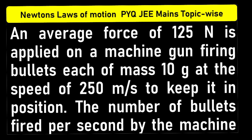An average force of 125 newton is applied on a machine gun firing bullets each of mass 10 grams at the speed of 250 meter per second to keep it in position. The number of bullets fired per second by the machine is...